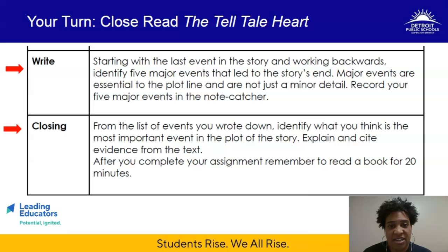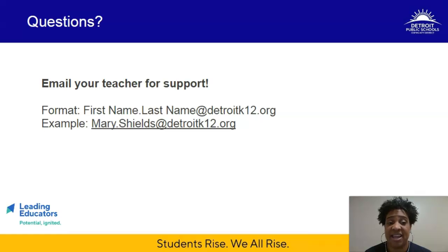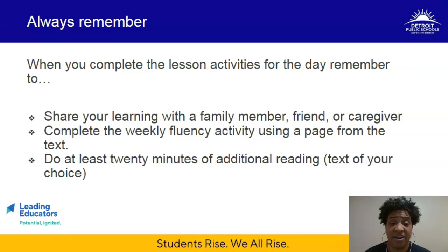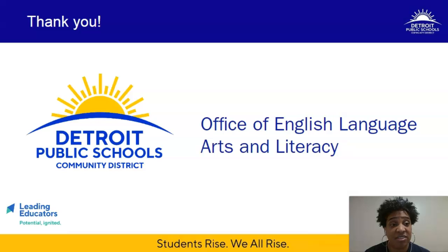Now that you know how to approach those two activities, it is your turn to write — engage in the literary dominoes activity by starting with the last event in the story and working backwards, identifying the five major events that led to the story's end. Then from that list, identify what you think is the most important event in the plot and make sure you explain and cite evidence from the text. If you need additional help, pause and replay the video as many times as you need, and reach out to a teacher via email using the information provided. Once you've successfully knocked these activities out of the park, share your learning with a family member, friend or caregiver, complete the weekly fluency activity, and do an additional 20 minutes of reading from a text of your choice. We will see you back here tomorrow so we can continue our close read.